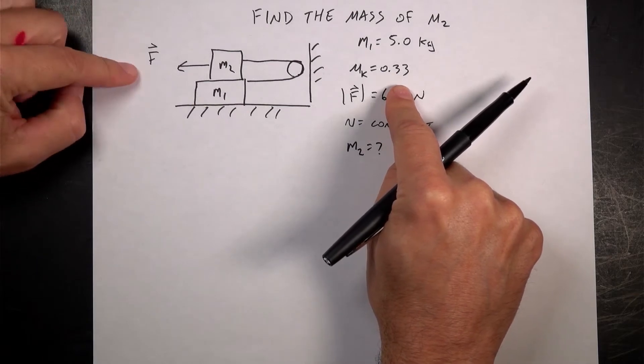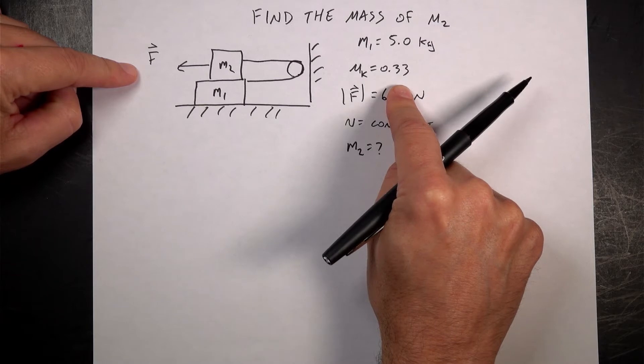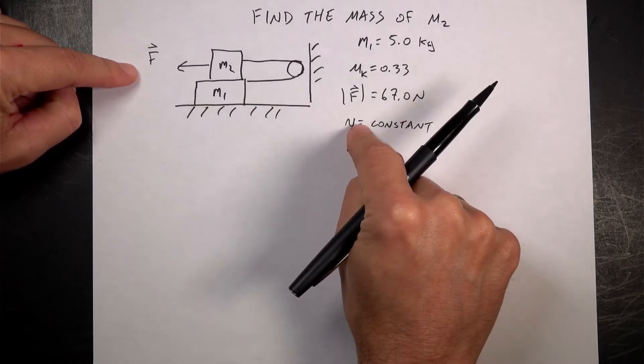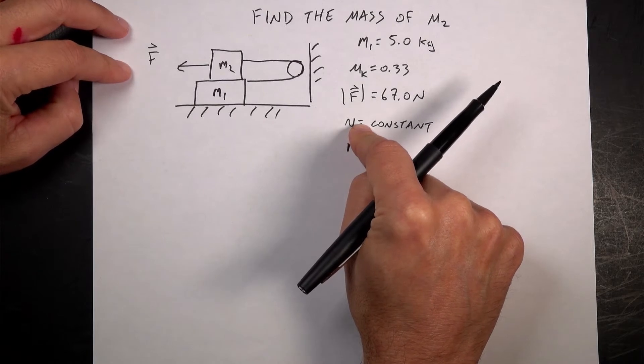And a force of 67 newtons pulls the block to the left. Well the force isn't pulling to the right, the tension does. The blocks are moving at a constant speed. What's the mass of the top block? I called it m2.